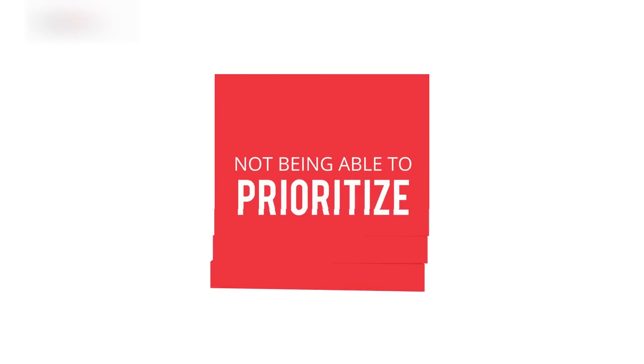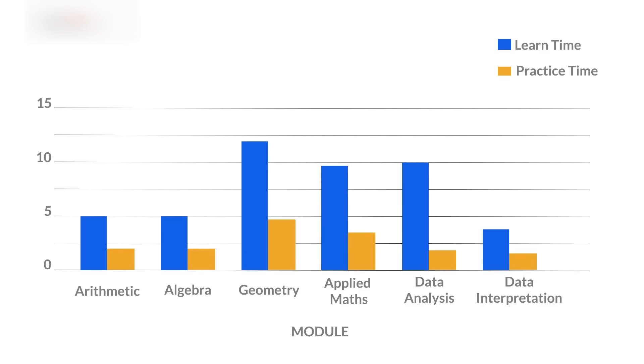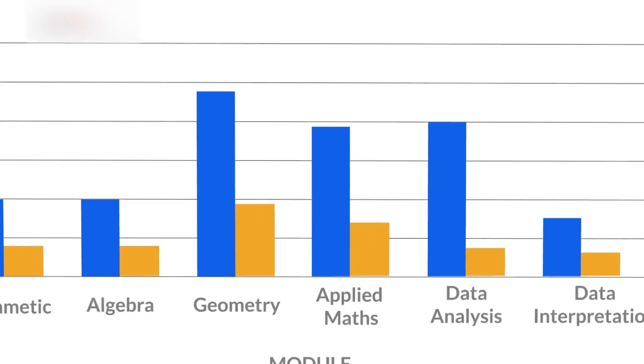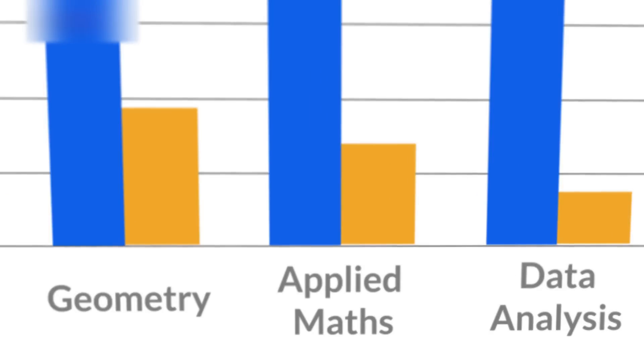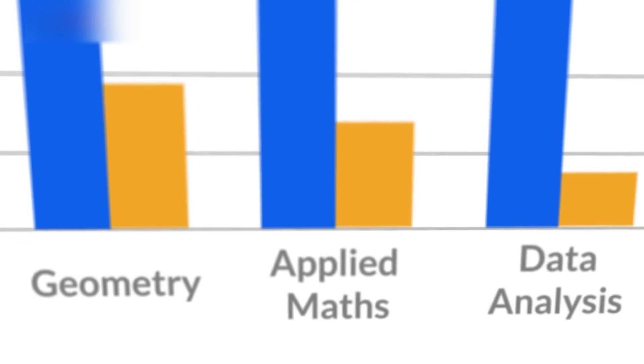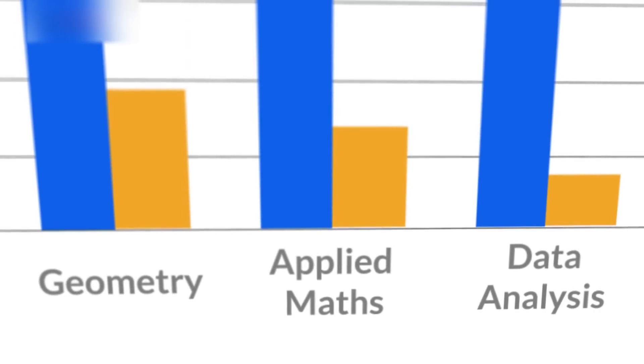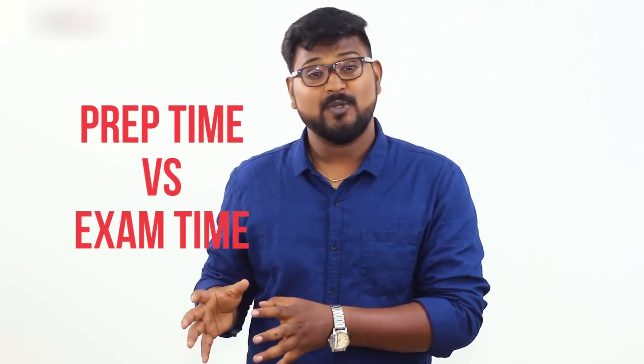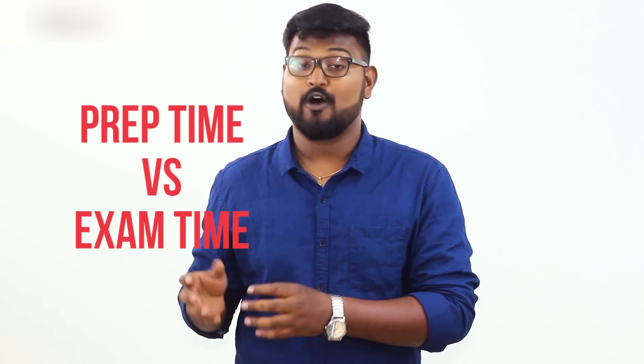Number one: not being able to prioritize. A 170 scorer spends 60% of his time learning. But what do they actually learn? Take a look at the average time spent per topic. You will find that students spend most of their time in these three important sections: geometry, applied mathematics and data analysis.